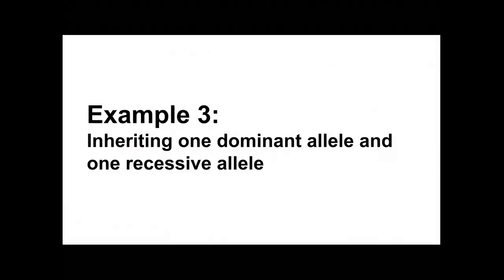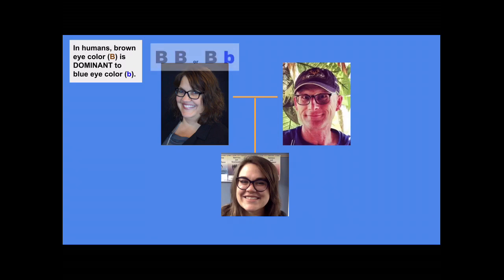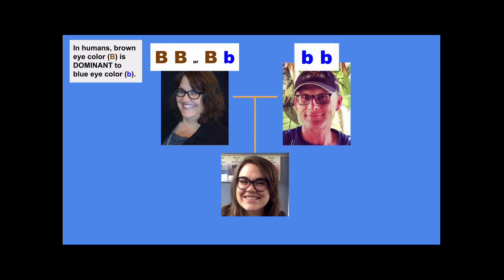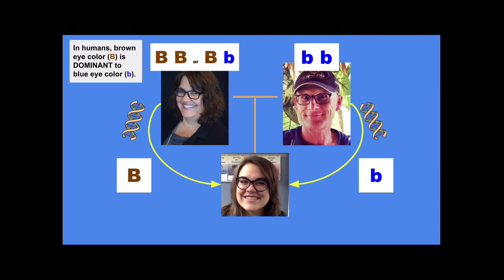Our last example: inheriting one dominant allele and one recessive allele. Remember, in humans, brown eyes are dominant to blue eyes. My mom has brown eyes, which means her genotype is either BB or Bb. My dad has blue eyes, so the only genotype he can have is bb. Even though we don't know which genotype my mom has, we know she sent me a big B because my eyes are brown. My dad passed me a little b, so my genotype must be Bb.